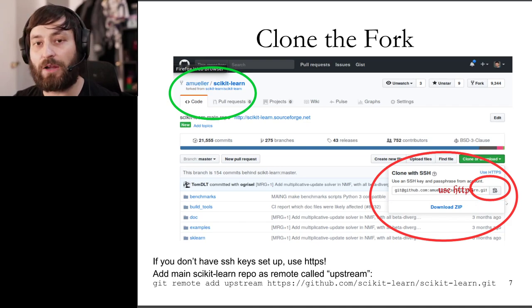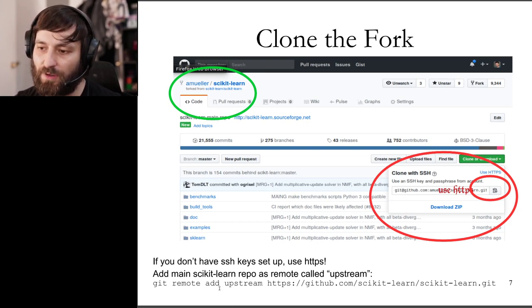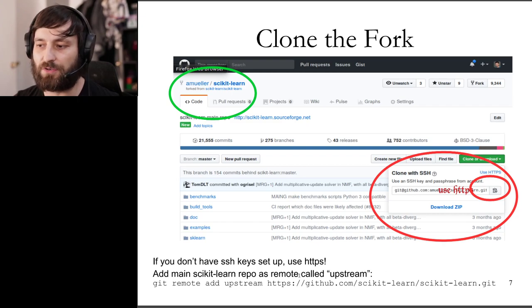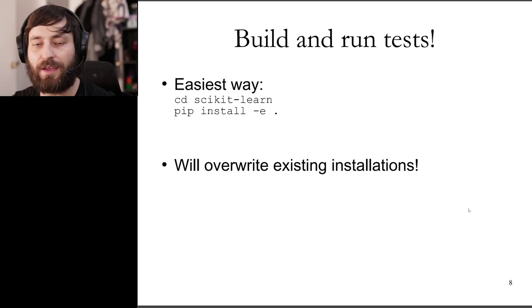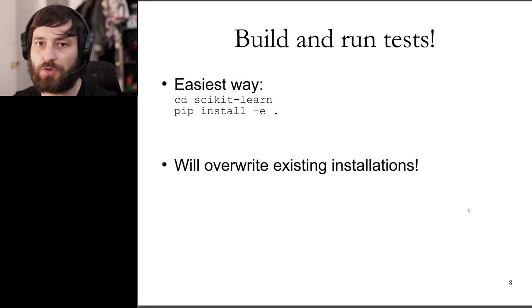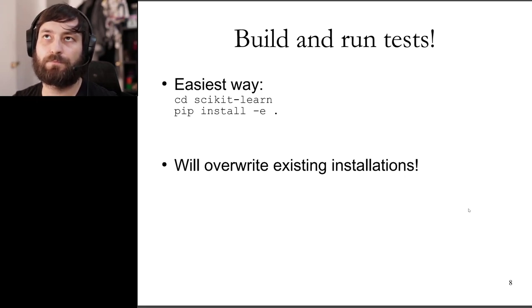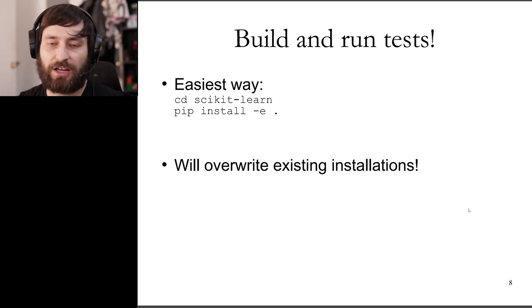Once you've downloaded the repository from your clone, you also want to add the main repository as an upstream so you can download the newest version if someone else makes changes. Do this by running: git remote add upstream https://github.com/scikit-learn/scikit-learn.git. Now you have your local copy of the scikit-learn development version. To install it, go to the folder you cloned and run pip install -e . — the -e flag makes it an editable installation.